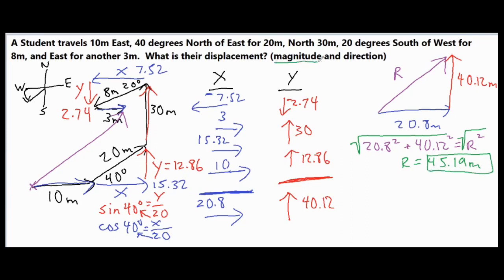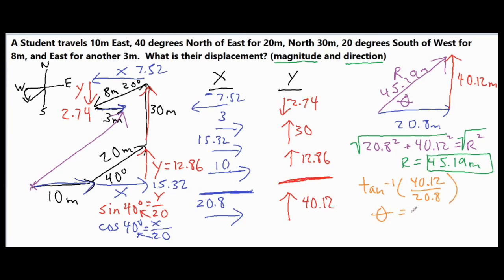That covers our magnitude — 45.19 meters is the final magnitude of our displacement. Now we find the direction. We have all three sides of the triangle, so to find the angle we use the inverse tangent. Inverse tangent of the opposite over the adjacent gives us inverse tangent of 40.12 divided by 20.8, which equals 62.60 degrees. Since this angle is tilted upward from straight east, we call it 62.60 degrees north of east.